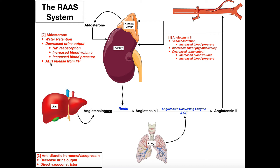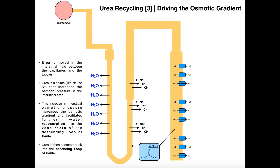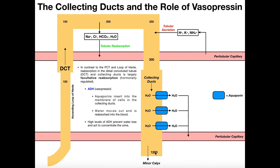Antidiuretic hormone is technically not part of the RAAS system, but we briefly discuss it because aldosterone causes its release. Antidiuretic hormone is also a direct vasoconstrictor, causing vasoconstriction of arterioles to help maintain blood pressure. Its major function is to decrease urine output. While aldosterone acts at the distal convoluted tubule, antidiuretic hormone acts at the collecting ducts, causing aquaporins to be inserted into the membranes of those cells, allowing water to be reabsorbed into the blood system so we retain water.